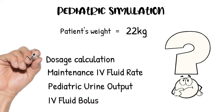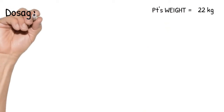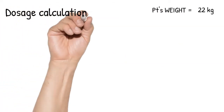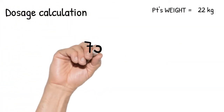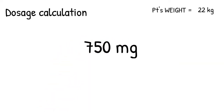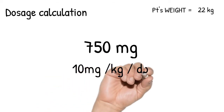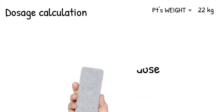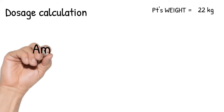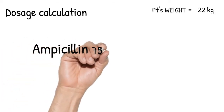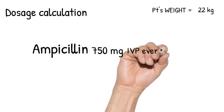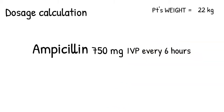Let's talk about dosage calculation first. There are two forms of dosages you will find in our scenarios. The first is a set dose, like that of an adult order, and the second form is weight-based dose. Let's talk about the first one. Let's say Dr. McGillicuddy ordered ampicillin 750mg IV push every six hours. On this order, you don't have to calculate it further — we are giving 750mg.